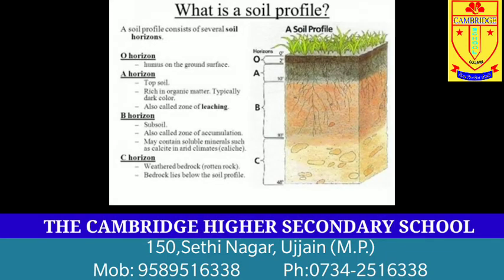Ab yeh baat aati hai ki soil ka structure kaisa hai — yaani uski soil profile kaisi hai? Soil jo hai, woh alag-alag layers se bani hai. That is why when we study the soil profile, we see the layers called horizons which are arranged during the formation of the soil. This sequence of layers is called the soil profile. The main layers of the soil can be easily observed by their color and size of particles. Toh jo sabse oopar ki layer hai, use top soil kehte hain — isse humus layer bhi kehte hain because this layer consists of decomposed materials and organic matter.